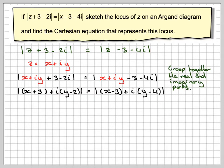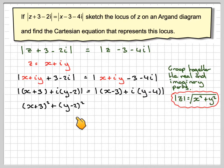Right, if we now take the idea that the modulus of z equals the square root of x squared plus y squared, so of the real bit and the imaginary bit, if we square both sides then we don't have to worry about the square root. So this will become x plus 3 all squared plus y minus 2 all squared equals x minus 3 all squared plus y minus 4 all squared.